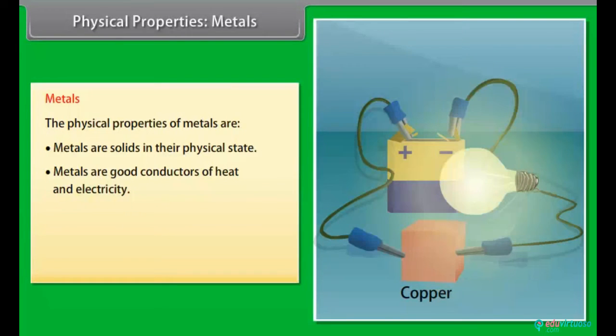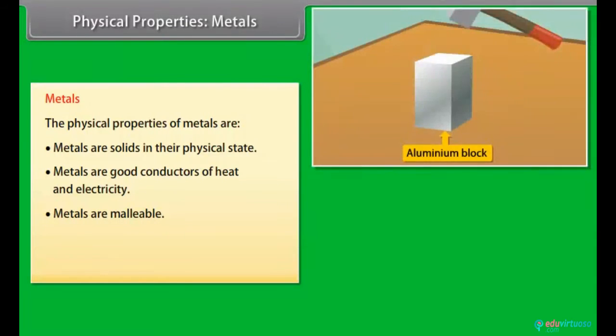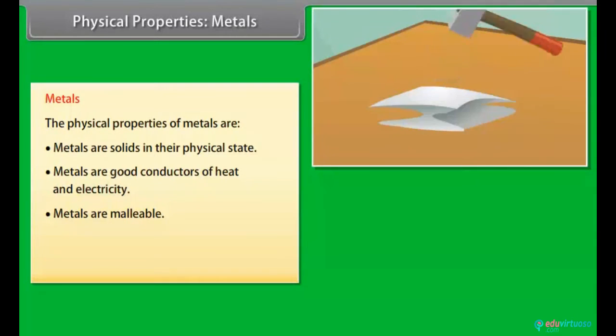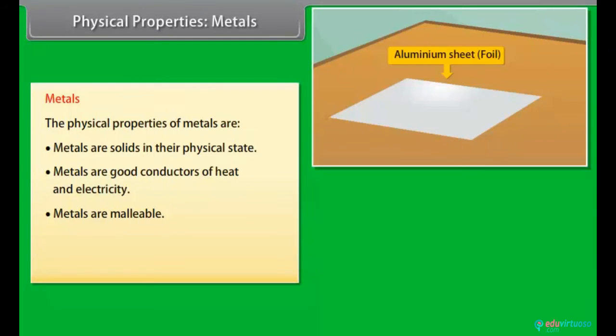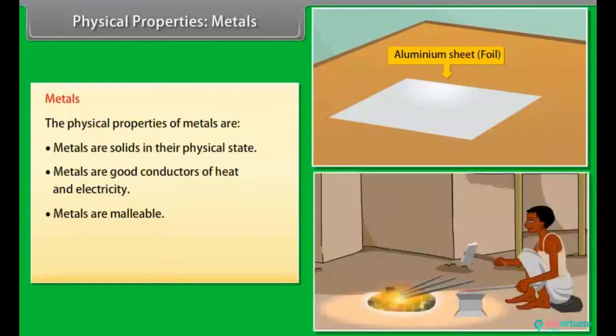Good conductors of heat and electricity. Metals are good conductors of electricity as they have free electrons. For example, silver and copper are the best conductors of heat and electricity, whereas lead is the poorest conductor of heat. Malleable. Metals can withstand hammering and be made into thin sheets known as foils. For example, iron is heated and then hammered into different forms, foils, shapes, etc.